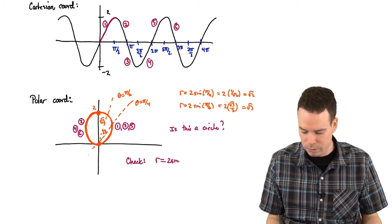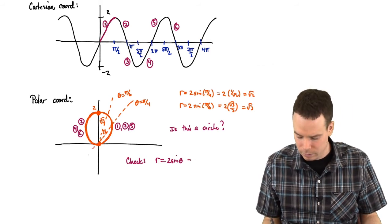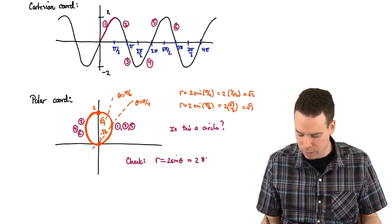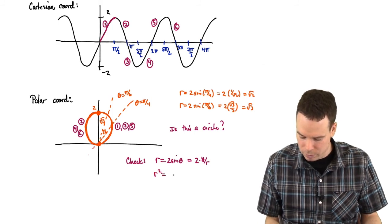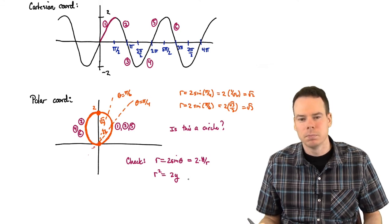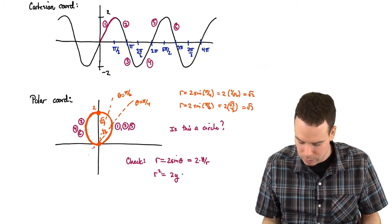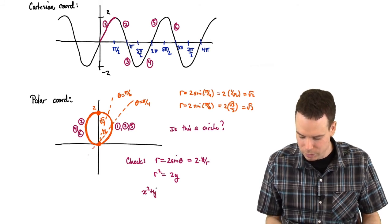Well, r is 2 sine theta. Well, what's sine theta? Sine theta is y by r. Oh, so r squared is 2 times y. Oh. But 2 times y, which is r squared, is equal to x squared plus y squared.